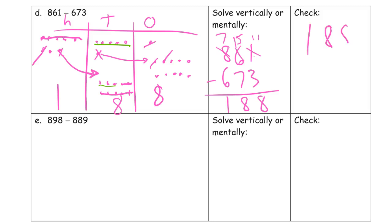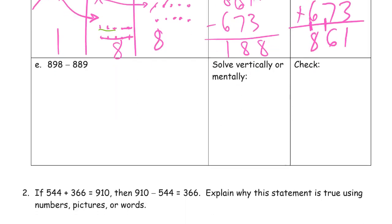So 188 plus 673. Starting with our ones place first, always from vertical addition or subtraction, always ones place. 8 plus 3 is 11, got to compose a 10. 8 plus 7 is 15 tens, plus the one more I compose is 16. Got to compose a hundred. And we add the six and the two ones in the hundreds place, and that's 800. And that's what we started with. That was our minuend.